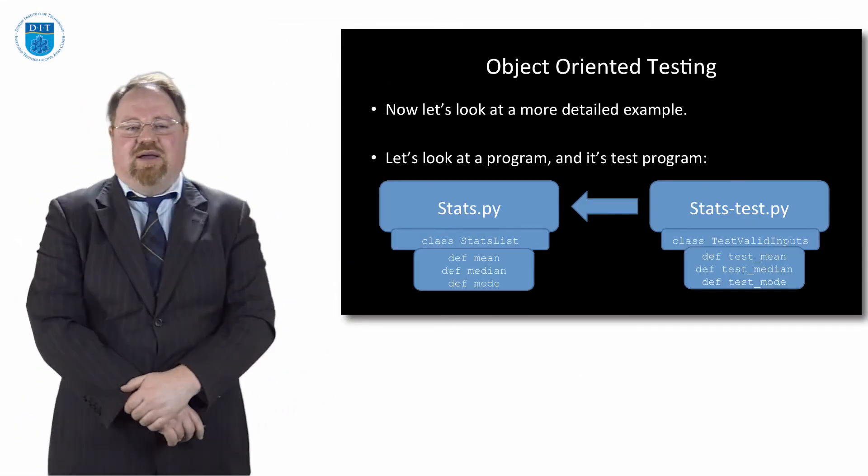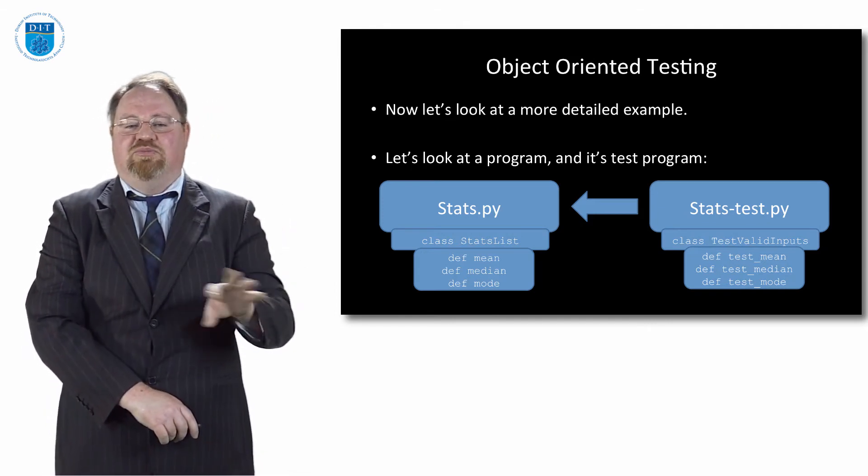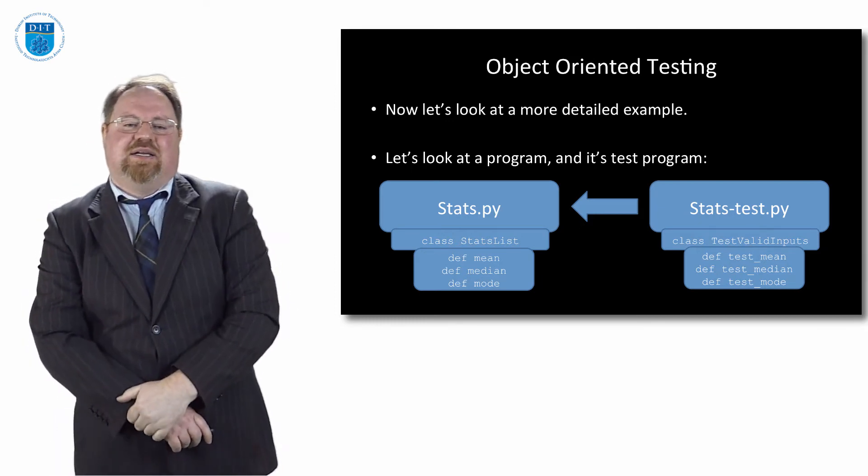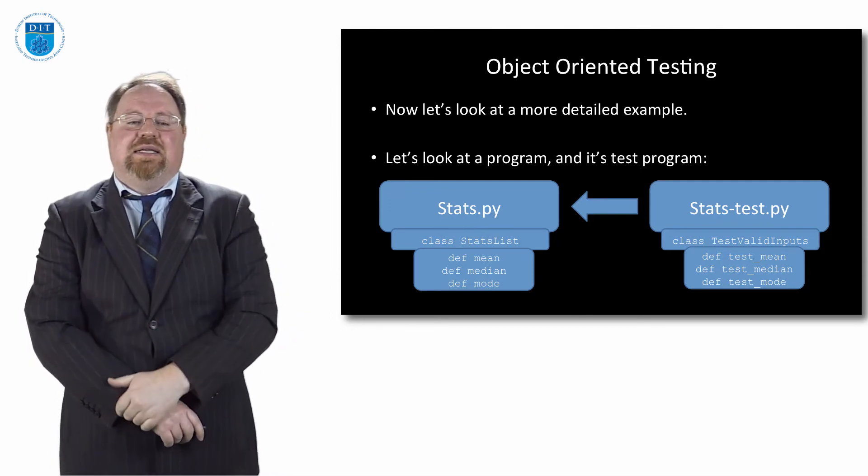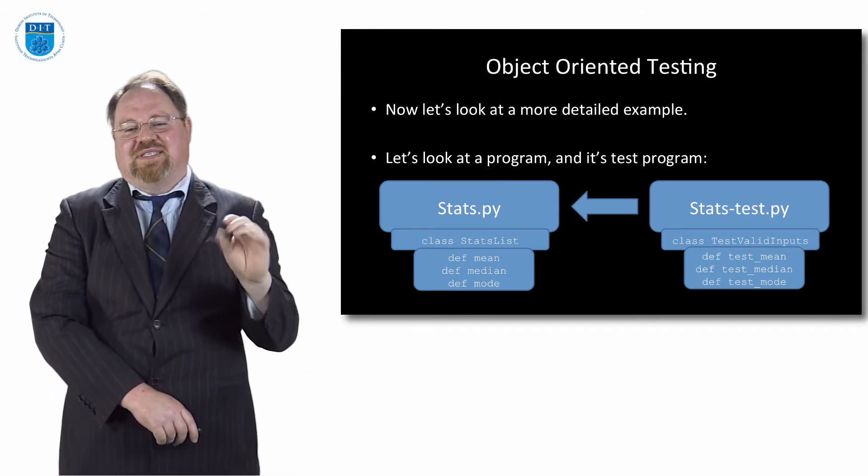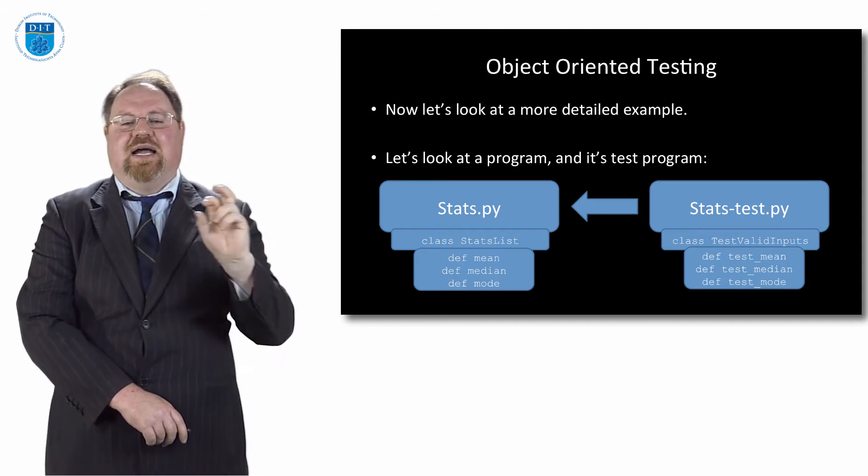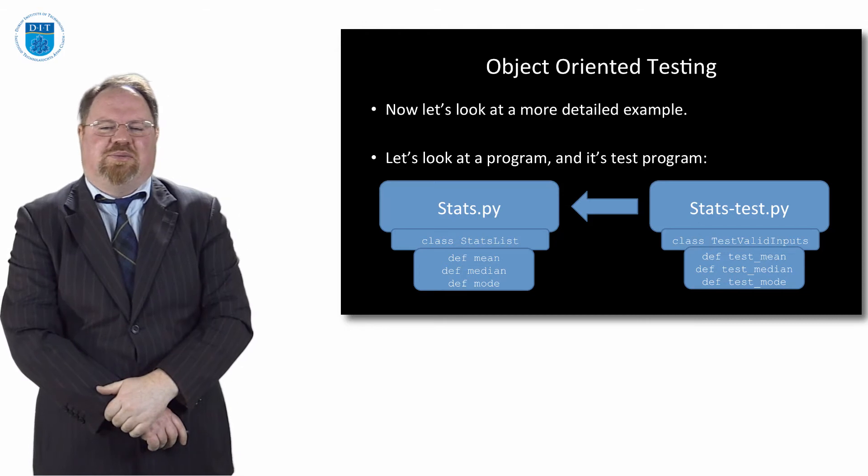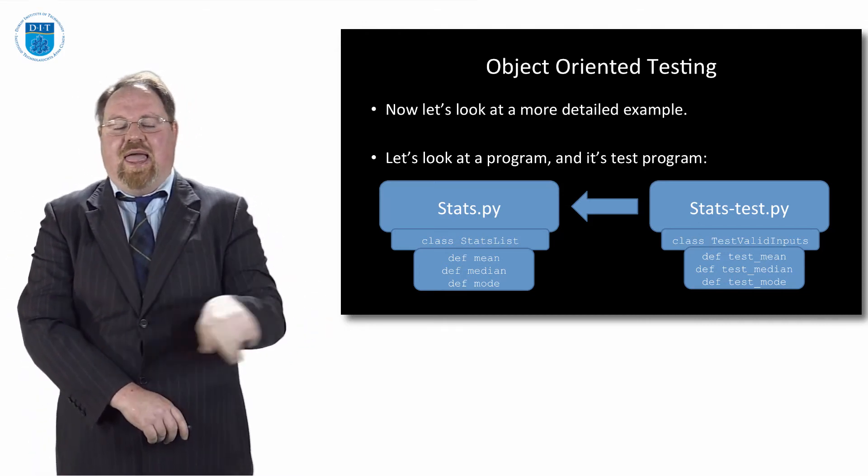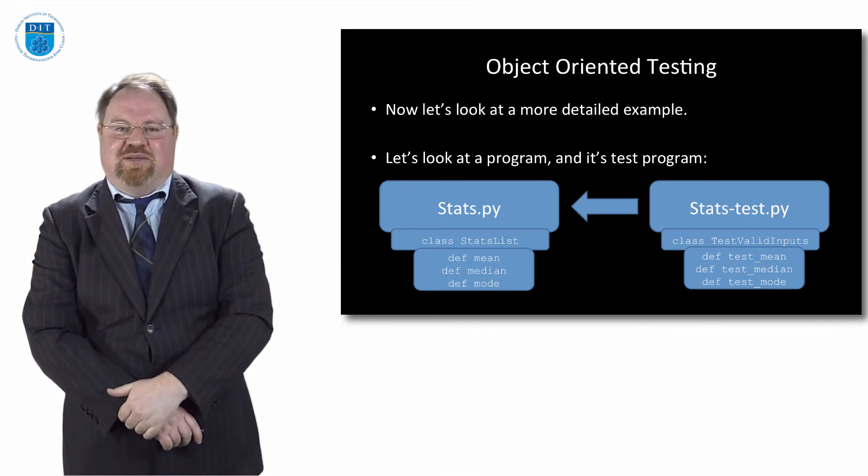Let's look at a more complicated example now. Let's have two separate programs. One is the test program and one is the program to be tested. The program we're testing is called stats.py and it has a statistics list in it and it has three methods: median, mean and mode. And then we have a stats test program which has a class which is inherited from TestCase. And then it has three methods in it. It has an extra secret one we'll talk about in a second, but it's three methods called test_mean, test_median, test_mode. So three methods to test, three methods in the testing tested program.